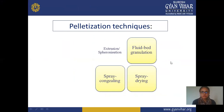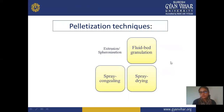The techniques used for pellet formation or manufacturing include: first, extrusion and spheronization; second, fluid bed granulation — using a fluid bed dryer to form pellets; third, spray congealing — maintaining cold conditions and spraying a polymer solution; and fourth, spray drying — similar to spray congealing but with temperature changes and different equipment construction.